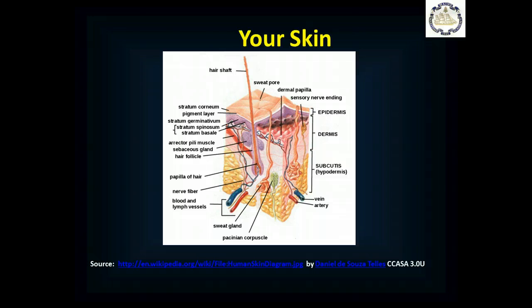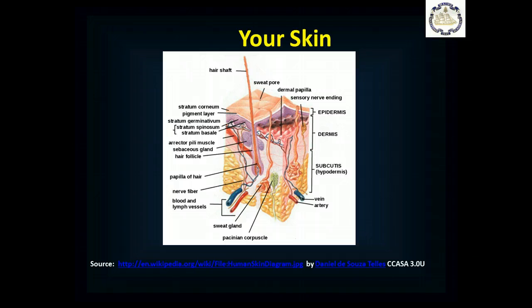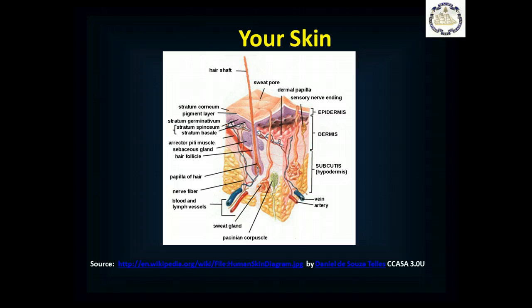Underneath that you have the real working structures — your dermis. In your dermis you've got your hair follicles and the erector pili muscles that make the hair stand up. You've got sebaceous glands, which squirt out oils to keep the skin properly moistened and pliable. You've got nerve endings, nerve fibers, and quite a bit of blood flow — nerves, arteries, and veins. Deeper you've got your subcutis or hypodermis, which is a fat layer that includes your larger vessels. Your sweat glands are also in the dermis.